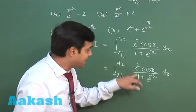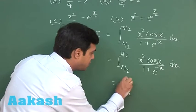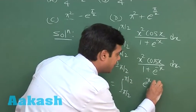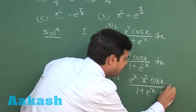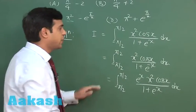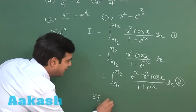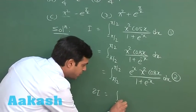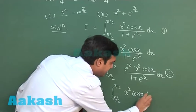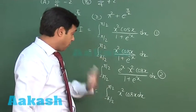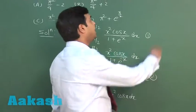Writing 1/(1 + e^(−x)) and taking LCM, e^x goes to the numerator, giving ∫ from −π/2 to π/2 of e^x × x²cos(x)/(1 + e^x) dx. Adding equations 1 and 2, we get 2I = ∫ from −π/2 to π/2 of x²cos(x) dx, since (1 + e^x) cancels. Since x²cos(x) is an even function, we can write 2I = 2 × ∫ from 0 to π/2 of x²cos(x) dx.